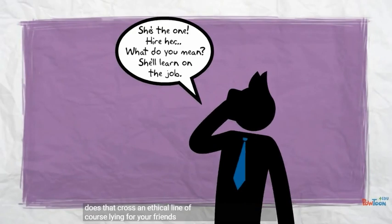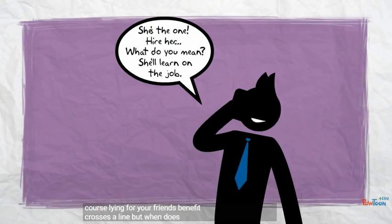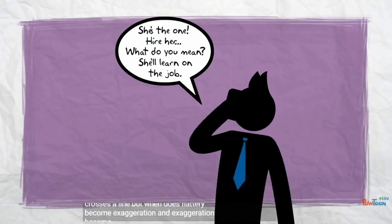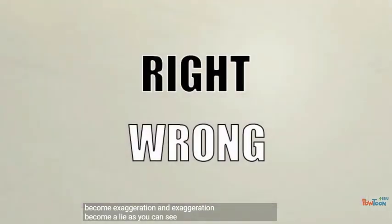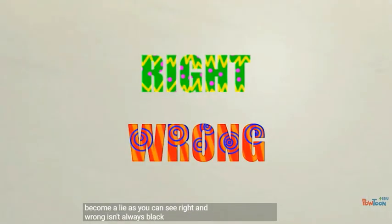Of course, lying for your friend's benefit crosses a line, but when does flattery become exaggeration and exaggeration become a lie? As you can see, right and wrong isn't always black and white.